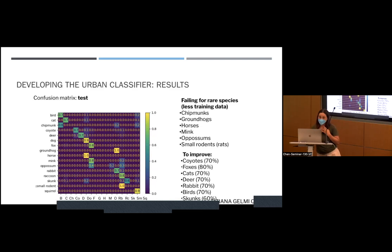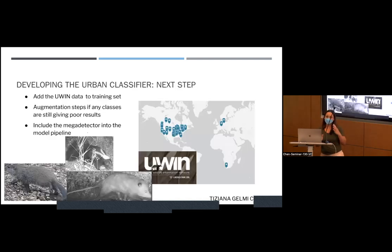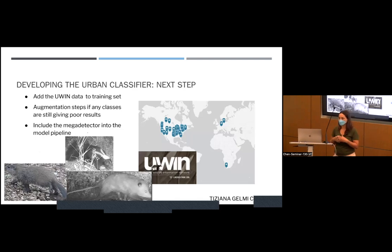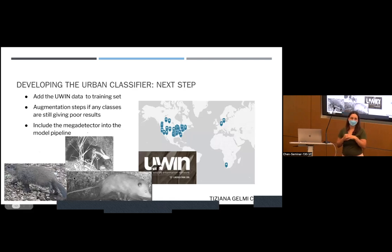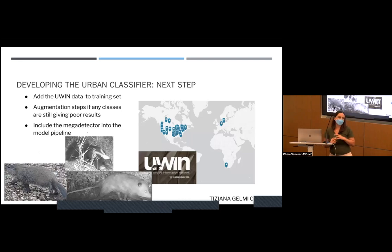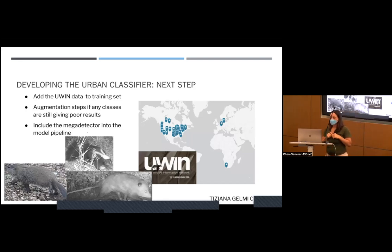The next step is to get the UIN data included in the model — potentially just keeping the most common species to start with, then incrementally teaching the model the rarer ones. When we combine the cities, instead of having 400 opossums we'll have around 1000, which will be much better. The second step is to try augmentation if some classes are still performing poorly, and fiddle with the model architecture.